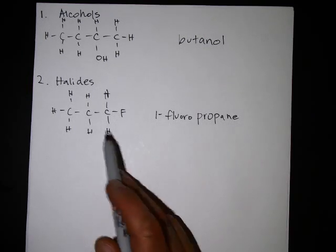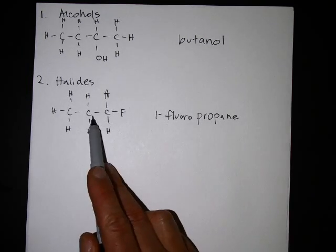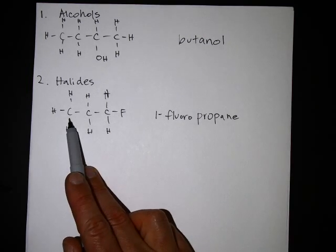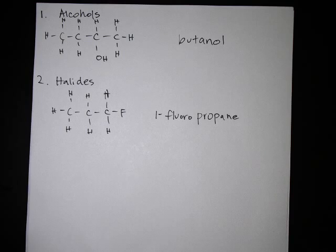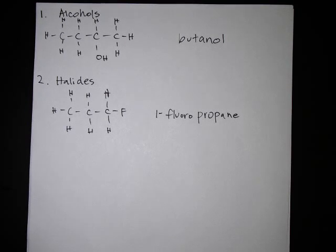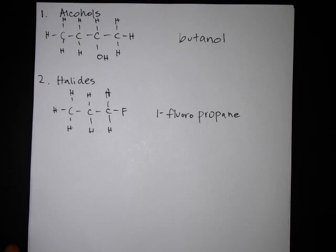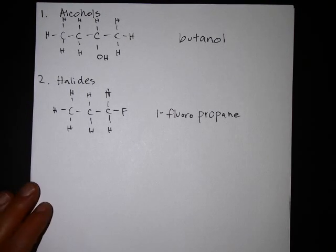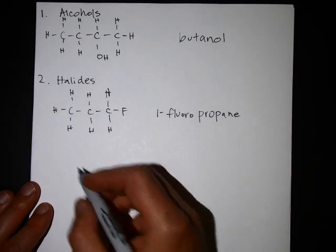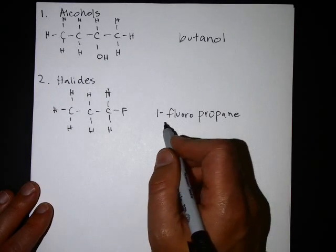There's just one of them, but we still have to indicate the position because it could be on different carbons. You don't use the mono prefix — but you do use di- if there are two of them. You never use mono for organic chemistry, but you do use di-.